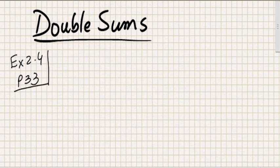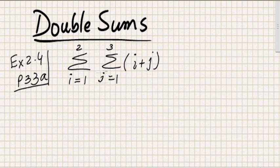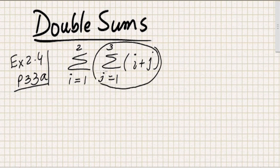The problem has two summations: the first summation is i equal to 1 up to 2, and the second summation is j from 1 up to 3 of i plus j. You should look at these two summations as going through all iterations for individual values of i.